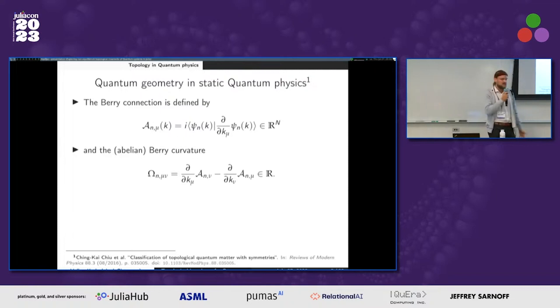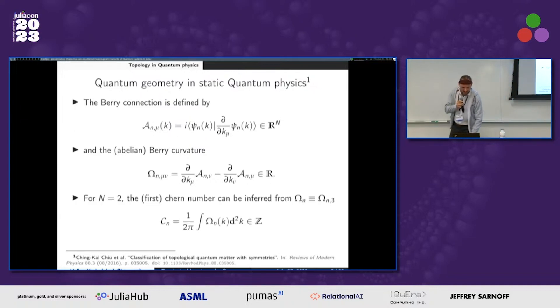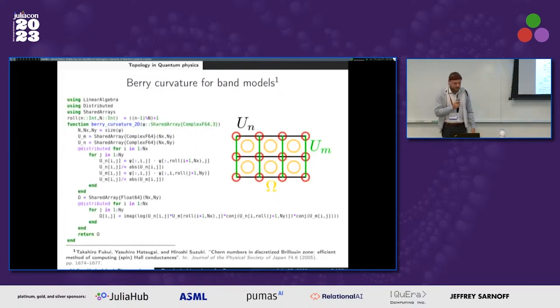And the Berry curvature, the curvature on this complex manifold, is defined just normally how you would also do it in electrodynamics. And then, for instance, for a 2D material, you can calculate the Chern number. This will just be the integral of this Berry curvature.